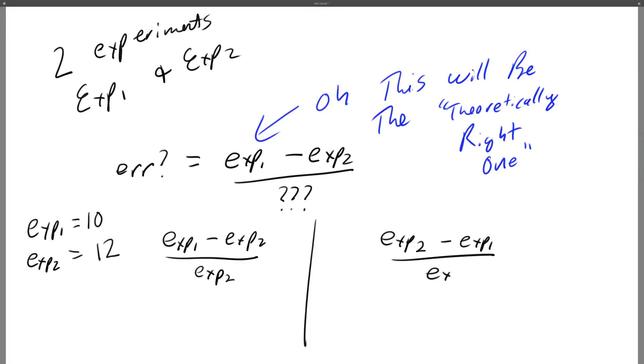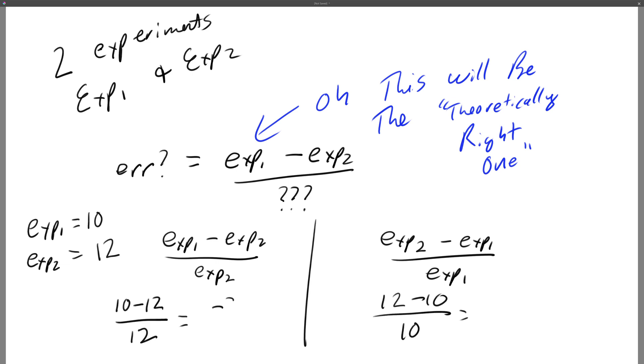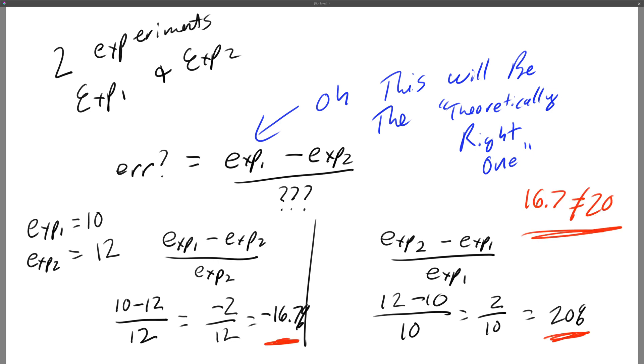Taking the results of experiment 1 minus experiment 2 divided by experiment 2 gives one result, and reversing that — taking experiment 2 minus experiment 1 divided by experiment 1 — gives another result. Sometimes they're kind of close, but other times it's very easy to see why these are completely different. So when you have two experimental results you don't know which one should be the reference, let alone if either of them are actually correct.